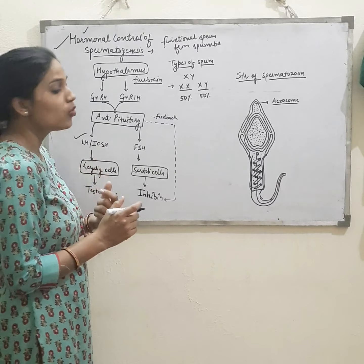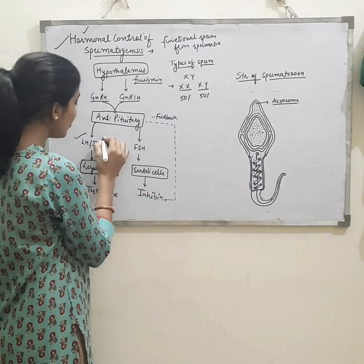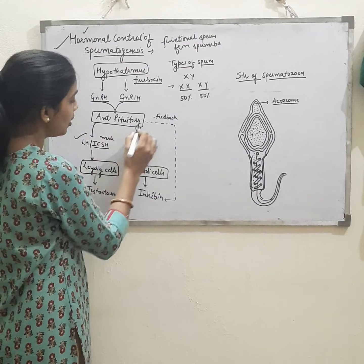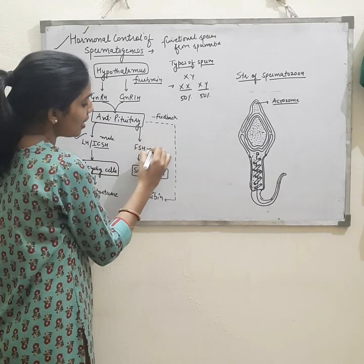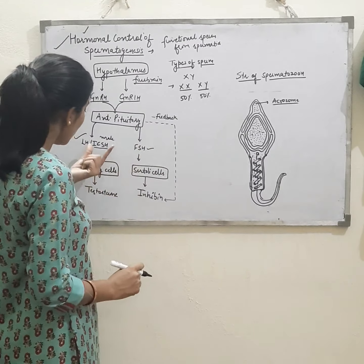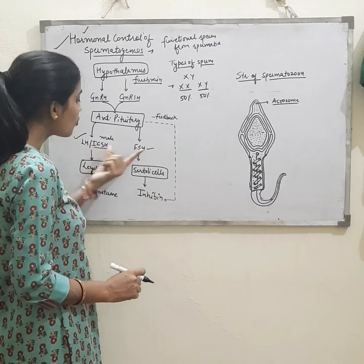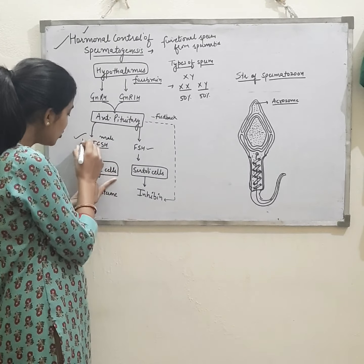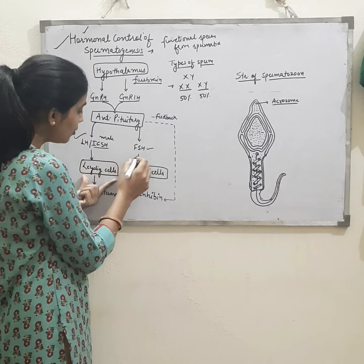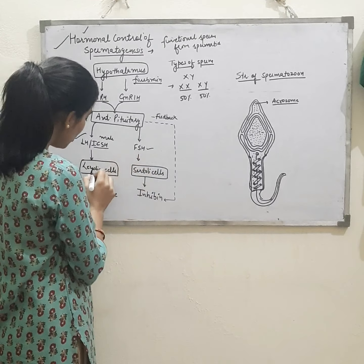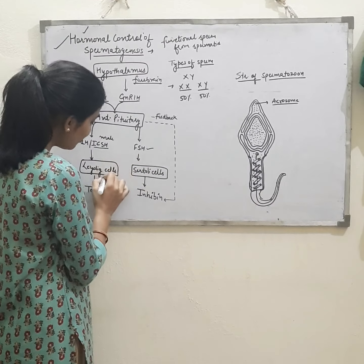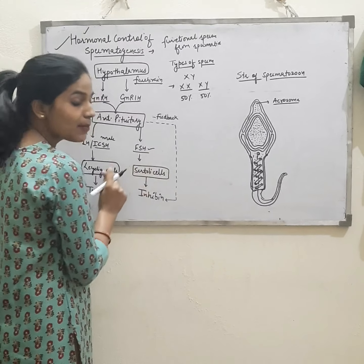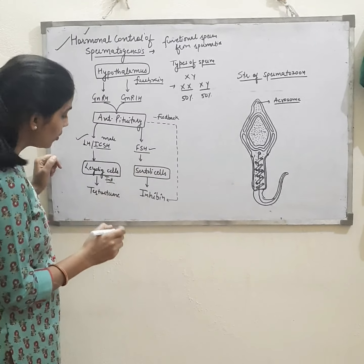The first is LH, luteinizing hormone, but in males this is also known as interstitial cell stimulating hormone. The second one is FSH. The receptors for LH are present on the Leydig cells, also known as interstitial cells, and the FSH receptors are present on the Sertoli cells.